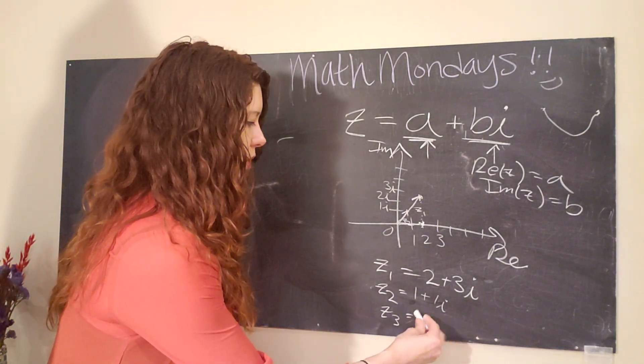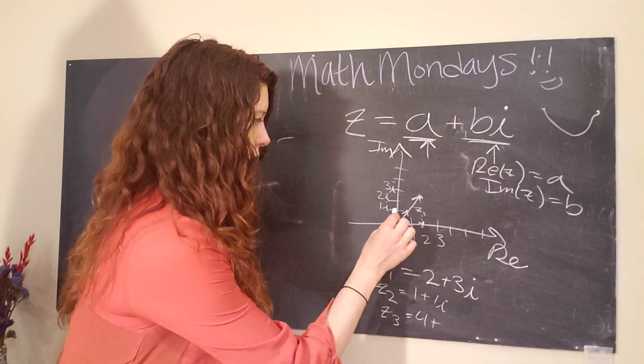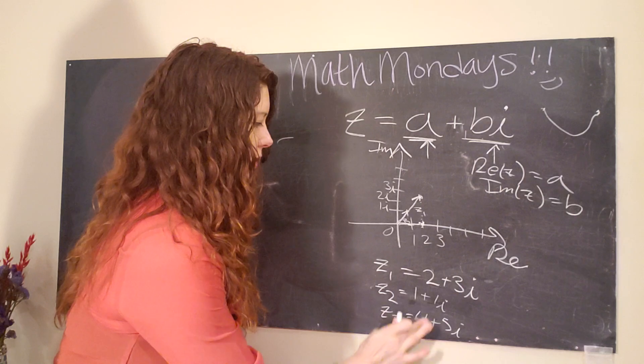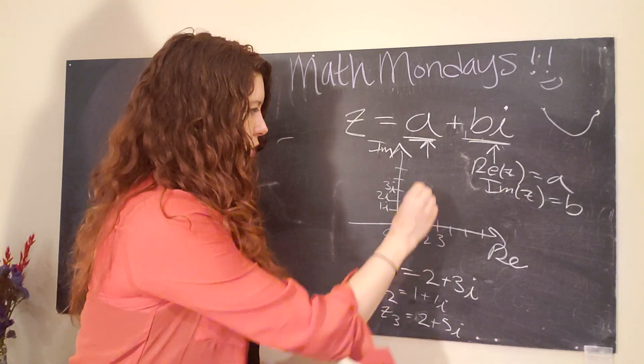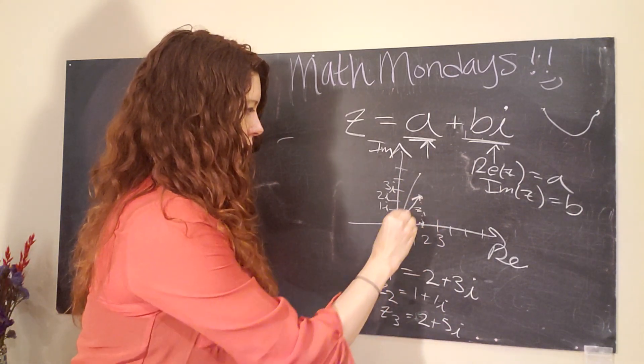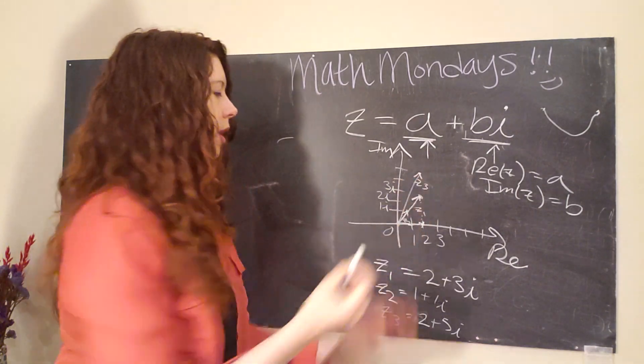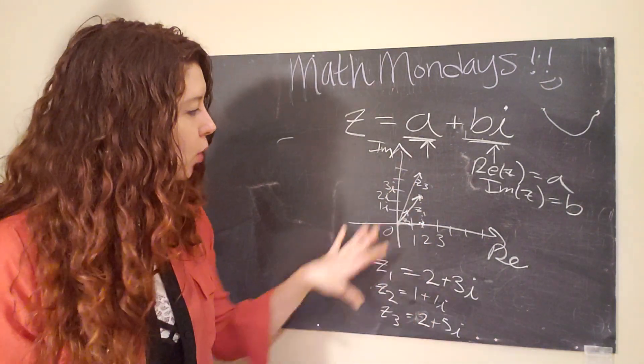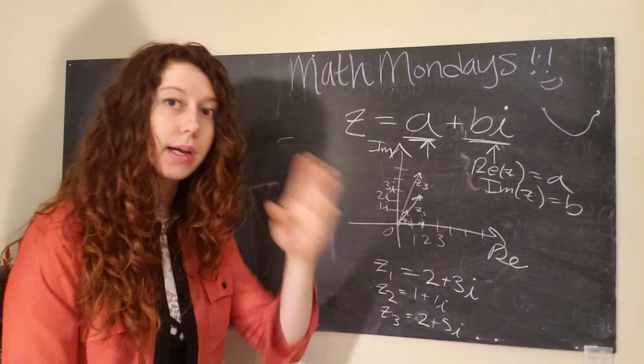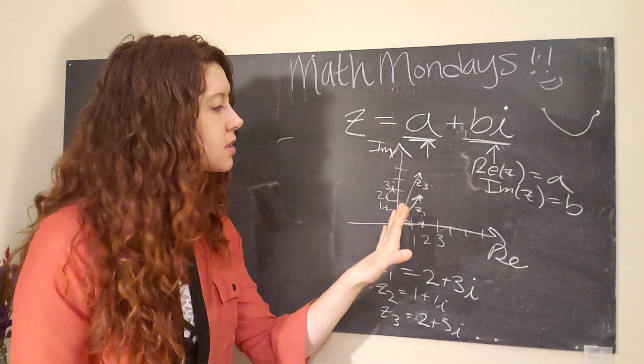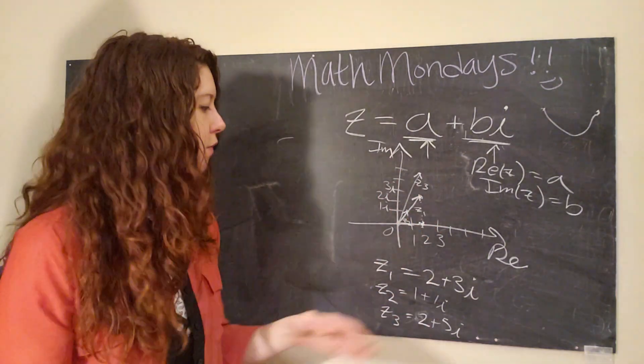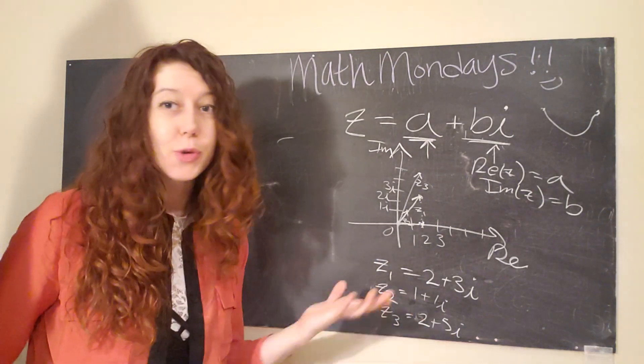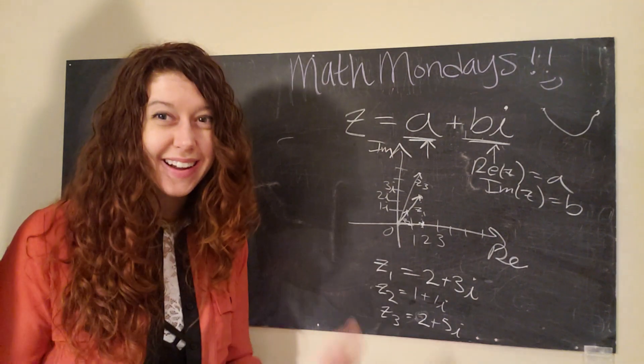And let's say we have Z three, which is four plus five I—actually let's do two plus five I. So just like when we're looking at equations of a line, when we're looking at complex numbers and we plot them like this, we can use this to talk about the size of the real part and the size of the imaginary part. So that's how we plot complex numbers. Not so bad.